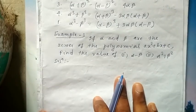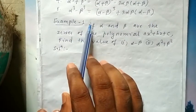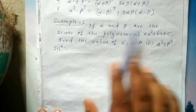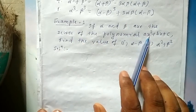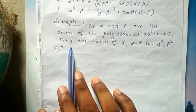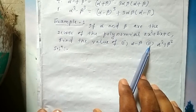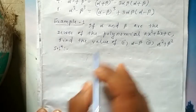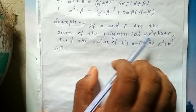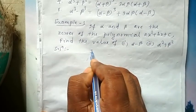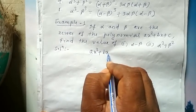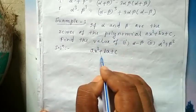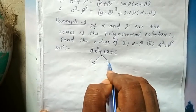One example I will explain now based on this application of zeros. The question is: if α and β are the zeros of the polynomial ax²+bx+c, then find the values of α-β and α²+β². What is given here: α and β are the zeros of the polynomial ax²+bx+c, and α and β are the two zeros of this polynomial.